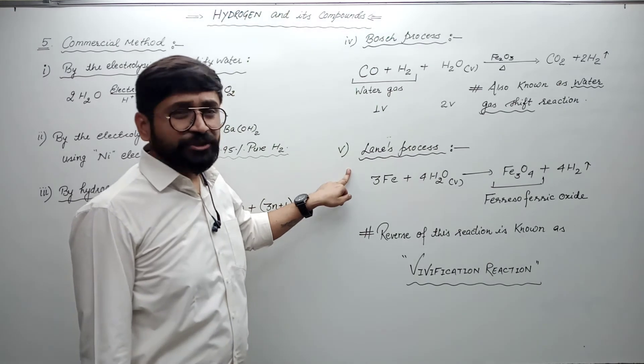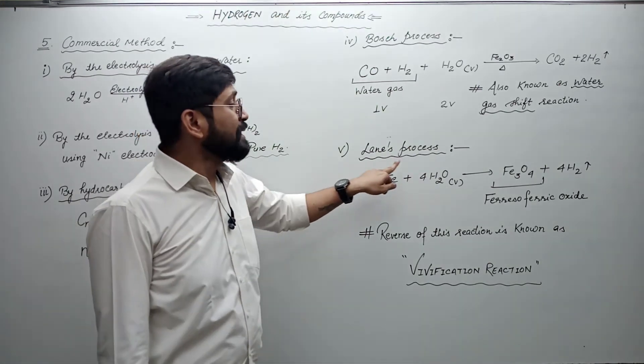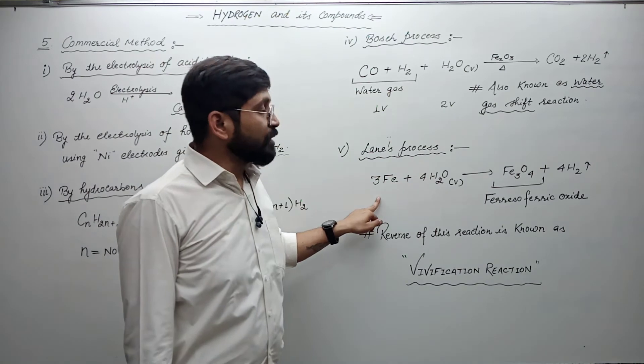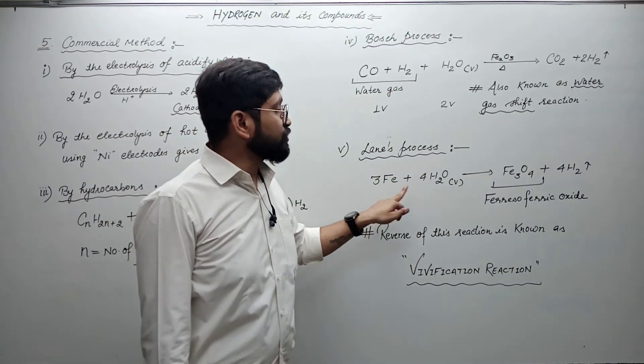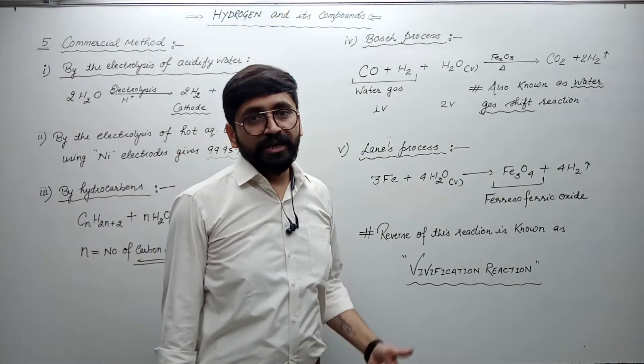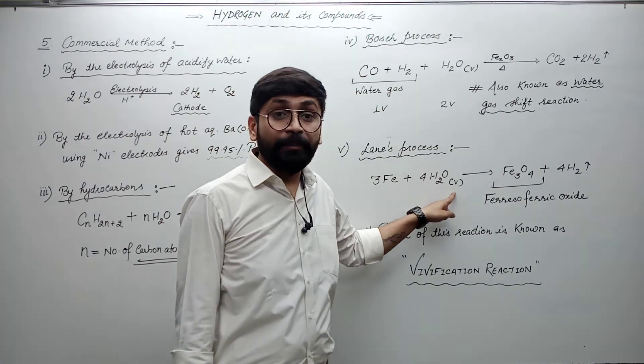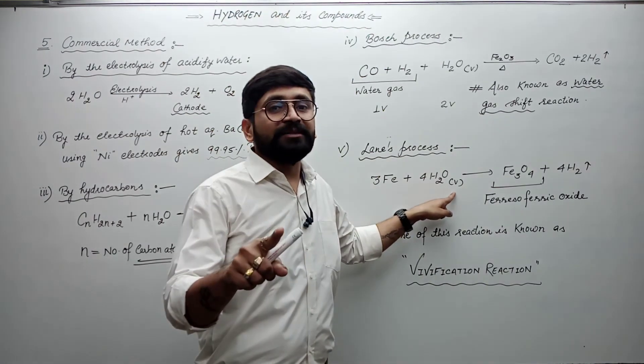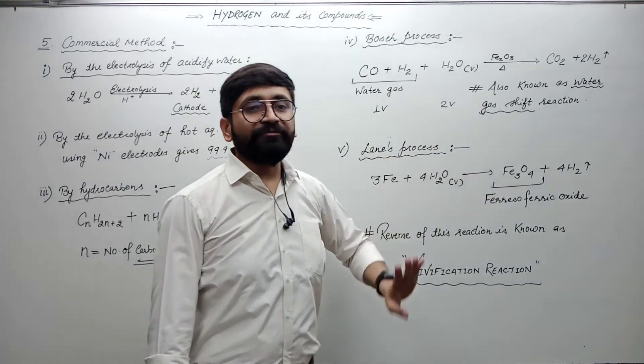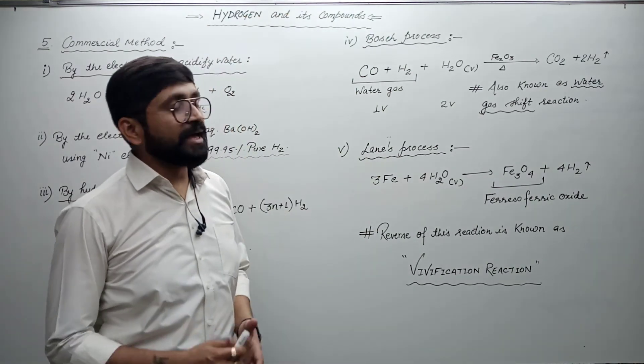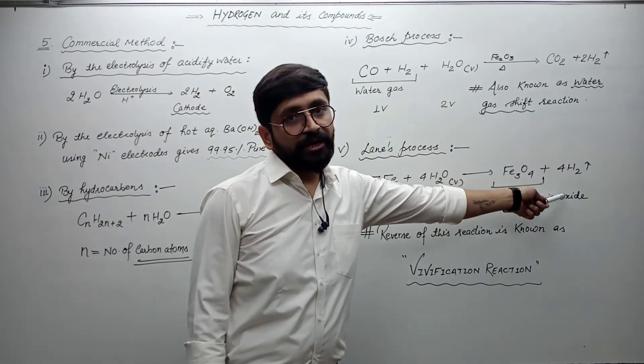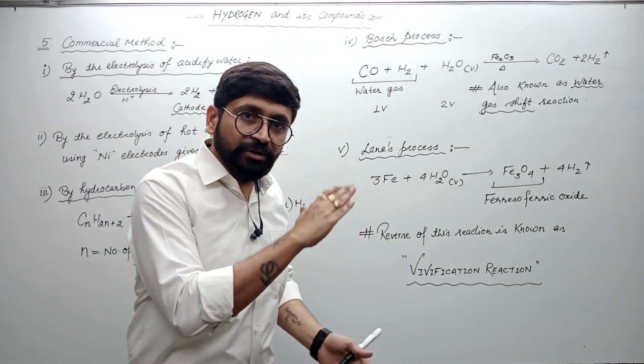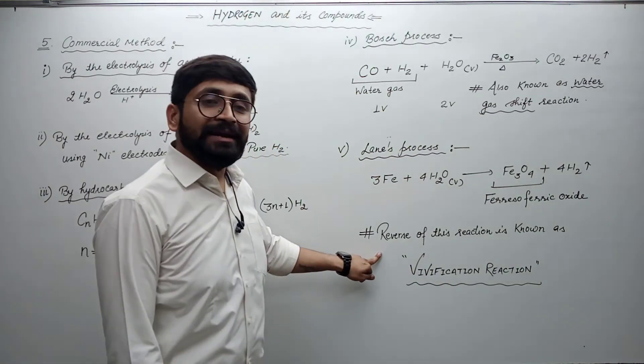The next process is a commercial method. The last process is the Lane process. In this process, we react spongy iron with steam. I get ferrous ferric oxide, the formula is Fe3O4, and I get hydrogen. This reaction is also in reverse direction.